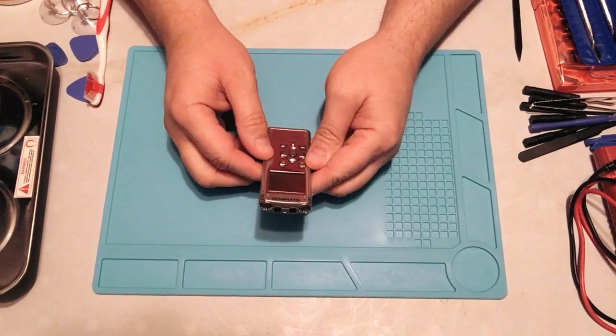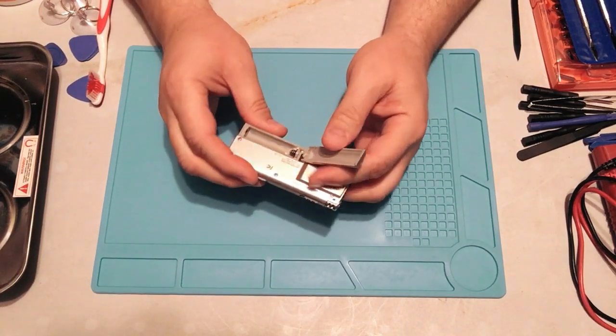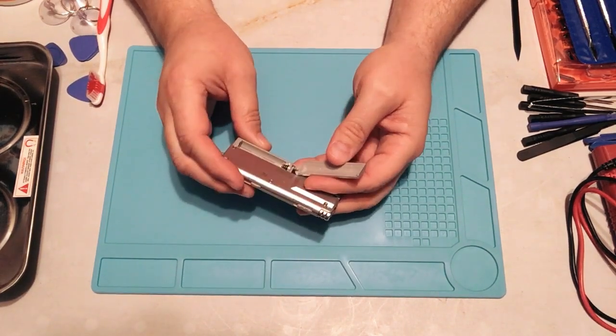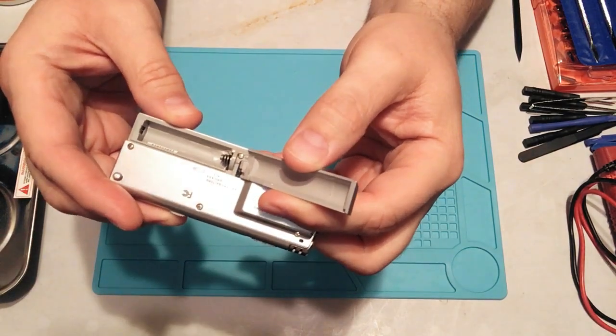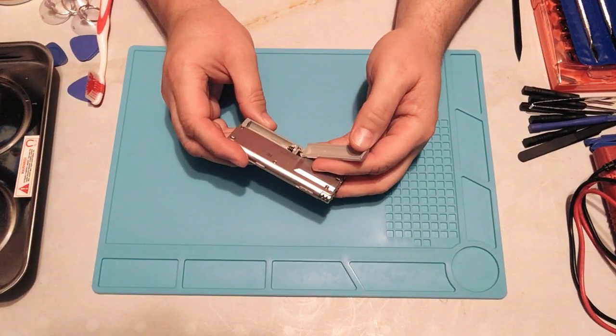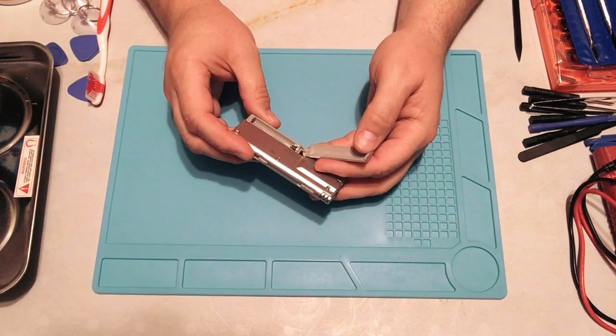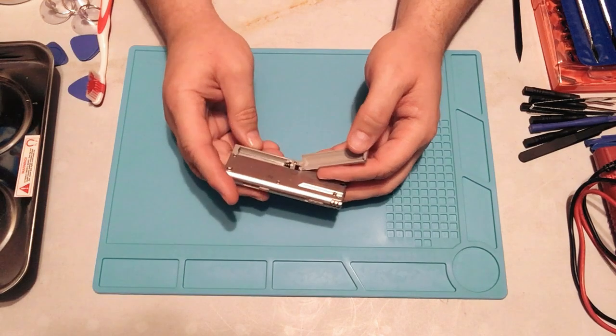Today we're going to be working on a digital voice recorder. This is my wife's. One of the batteries ruptured and we got a little corrosion inside there that needs cleaned up. Doesn't look like it really got on the innards, but we'll give it a little clean and she will be back in business with her recorder.